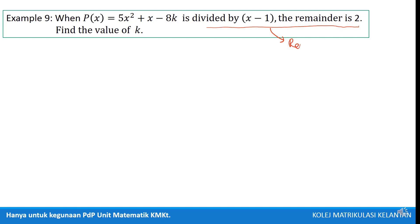We can use Remainder Theorem since it had remainder. So, the divisor is x minus 1, then x equal to 1, and P(1) equal to 2 from this statement. So the polynomial become like this. The divisor is x minus 1.